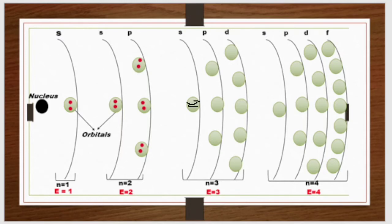In this way we represent the electron — the spinning electron in the orbital.